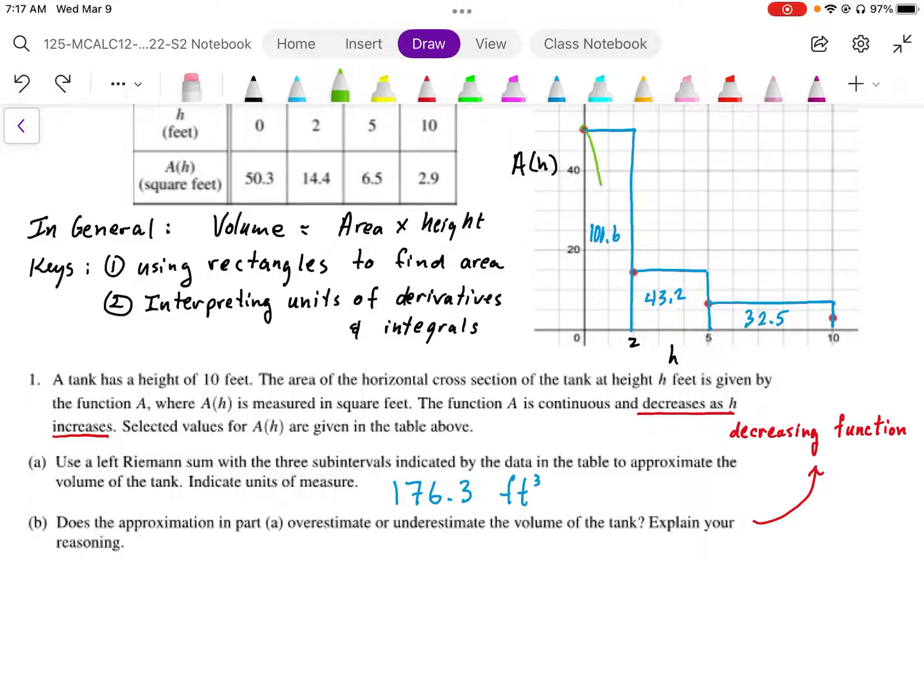So this is a strictly decreasing function. We know that it goes like this. And so that area must be an overestimate of the volume. This is going to be an overestimate.